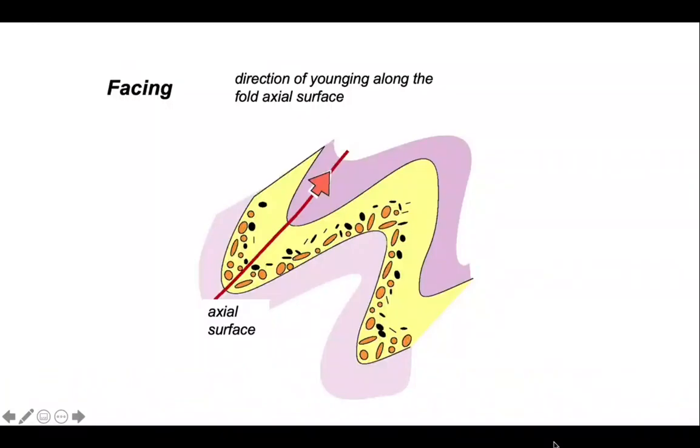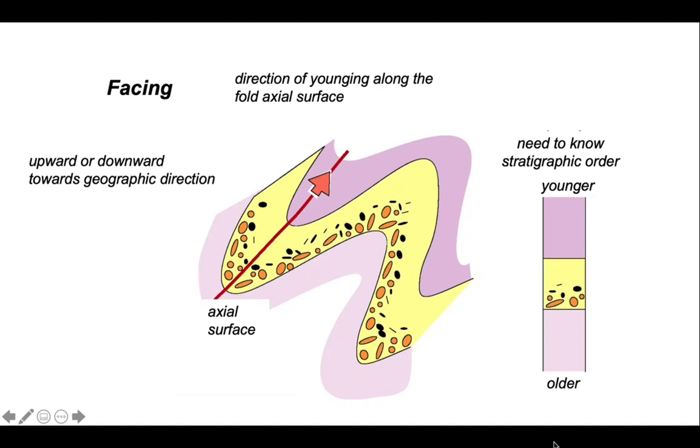The other concept we need to introduce when building cross sections is facing. Facing is defined as the direction of younging along the fold axial surface. It works for rocks where there is a known stratigraphic order. In other words, we need to build in observations of sedimentary structures. In this case, if we assume the rocks were deposited with coarse grains at the bottom and fining upwards, then we can use the grading to define an age sequence in the rocks. Hence, these folds are upward facing.